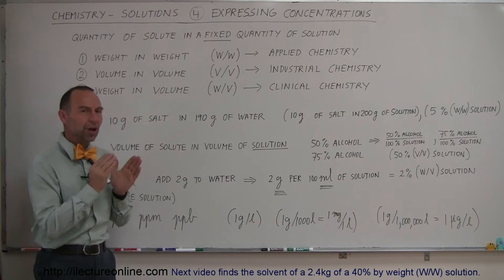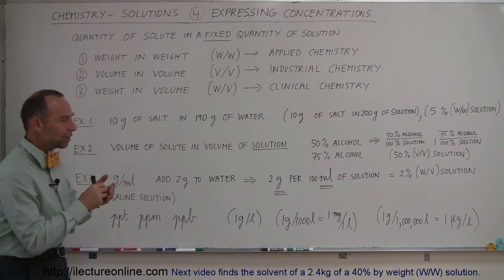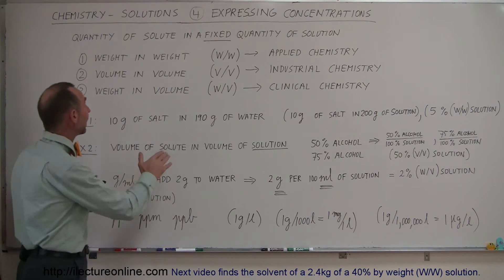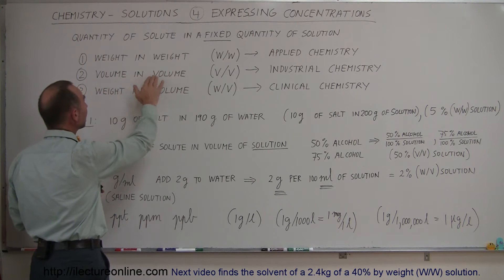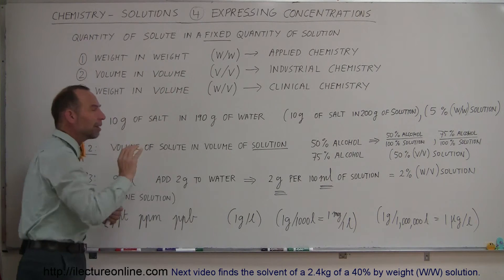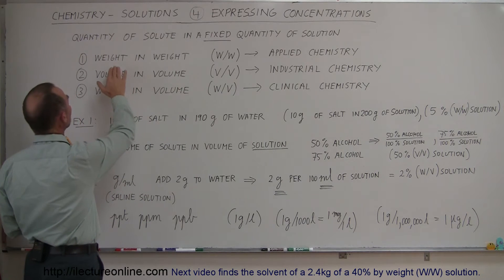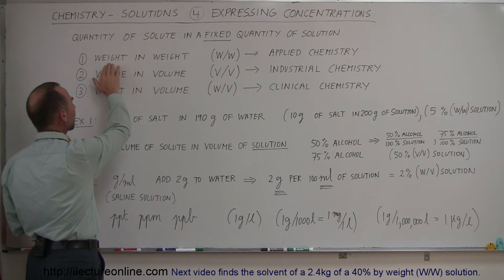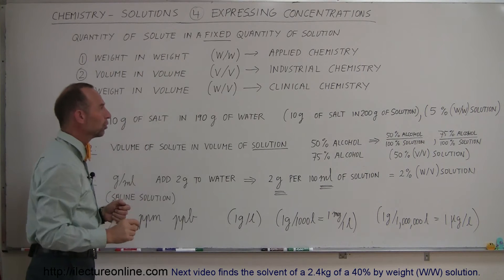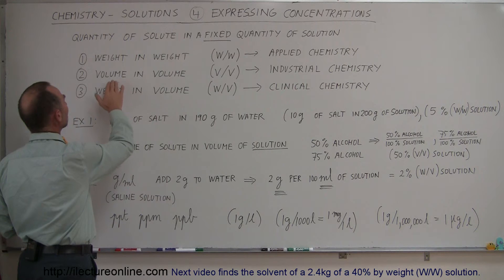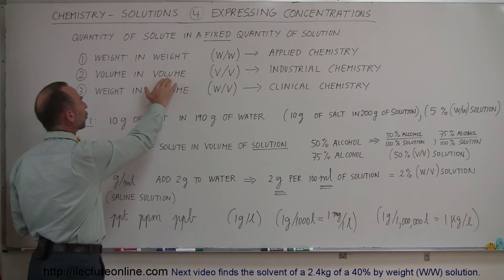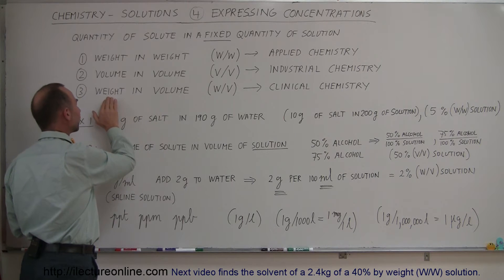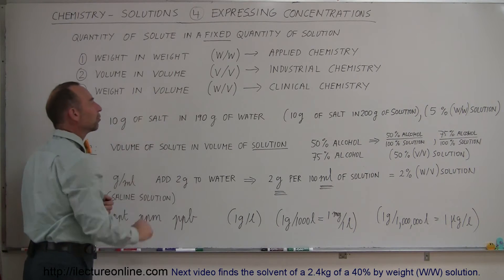What we're going to do here is talk about three very significant ways of expressing the amount of solute you have in a solution. We can do it by doing weight-in-weight, volume-in-volume, or weight-in-volume. That means we can express how many grams of the solute we have in how many grams of the total solution, how much volume of the solute we have in the total volume of the solution, or how many grams of the solute we have in so much volume of the solution.